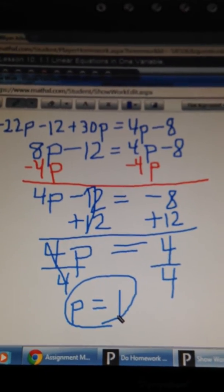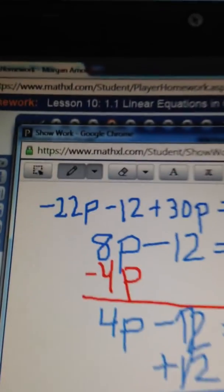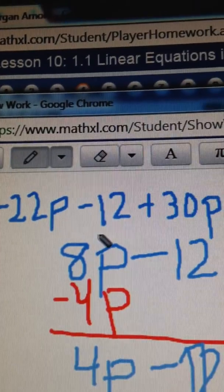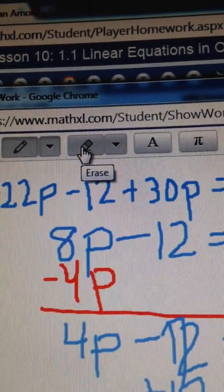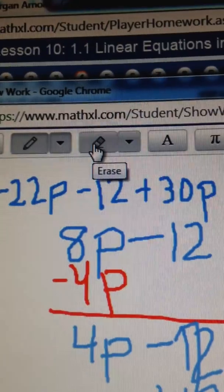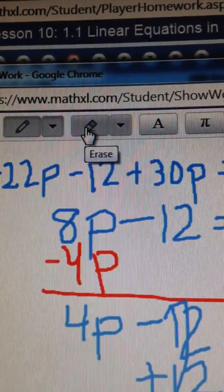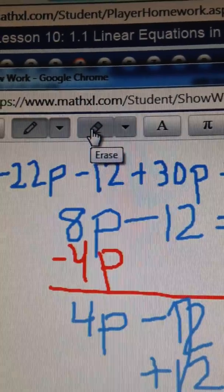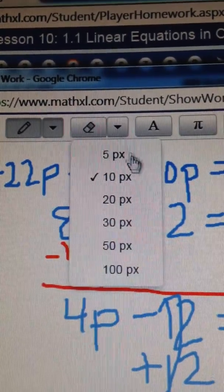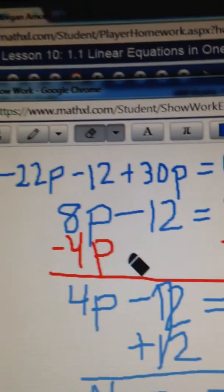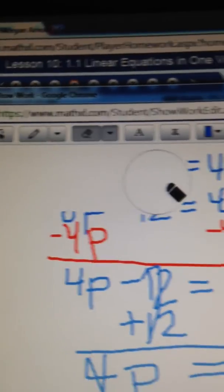Again, if you make a mistake along the way, you can go up to the eraser and click on it and erase what you need to. Or let's say you did the whole problem wrong and need to start over. You just click on the largest eraser at the bottom and just start erasing everything.